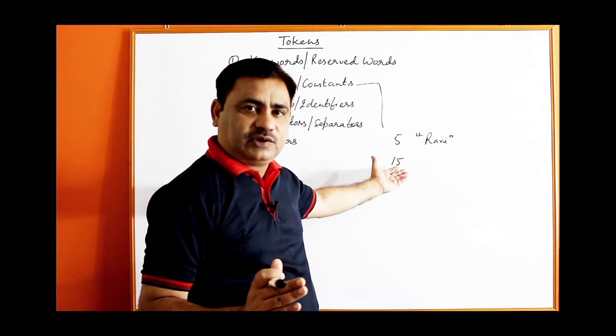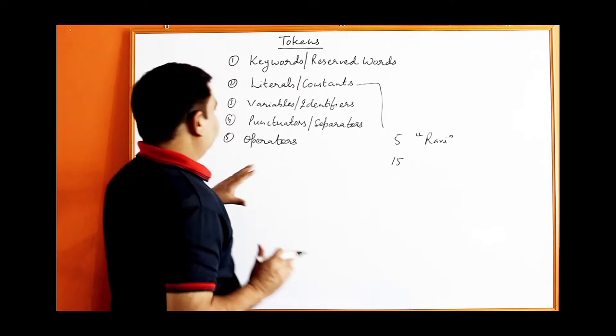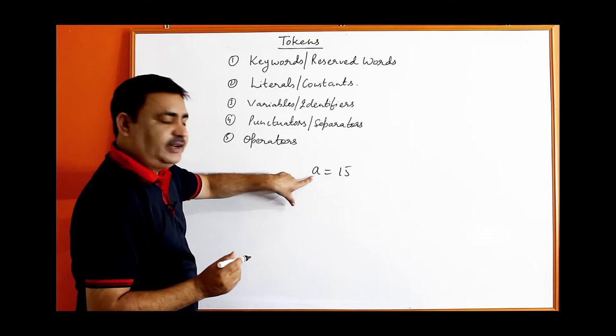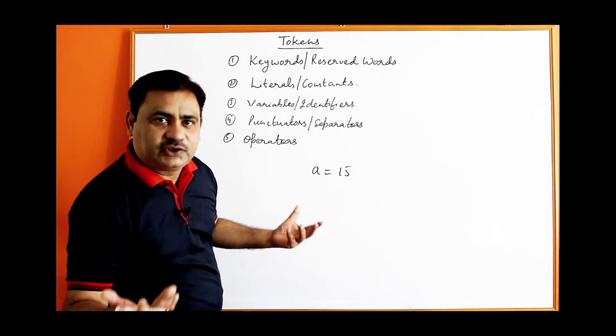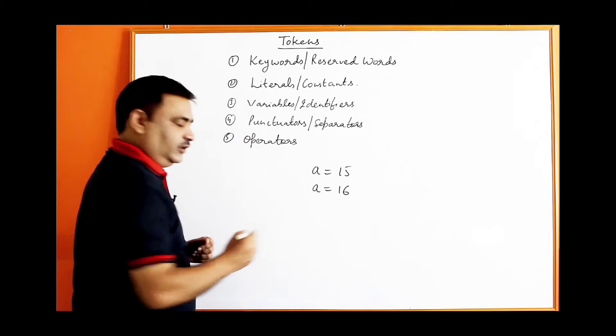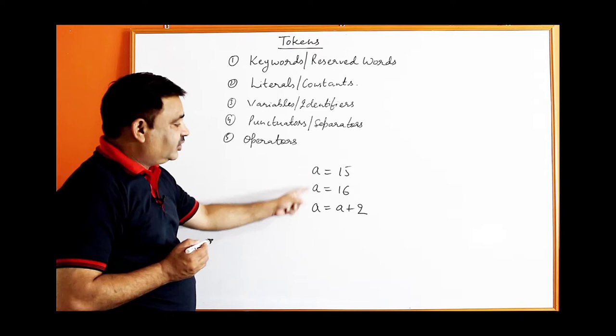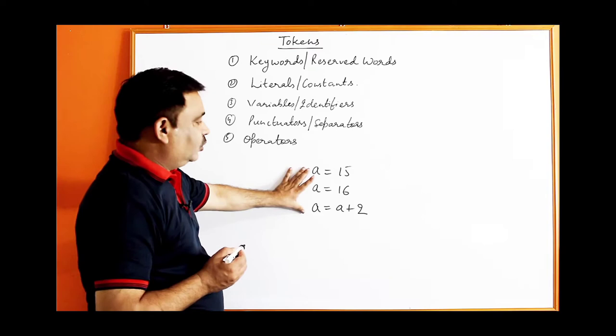The third token is variables. If I write a equal to 15, here 15 is the constant and a is the variable. Variables are data items whose values can be changed during the execution of a program — you can increase or decrease the value, for example a equal to 16 plus 2 equals 18. The variable names are provided by the user.